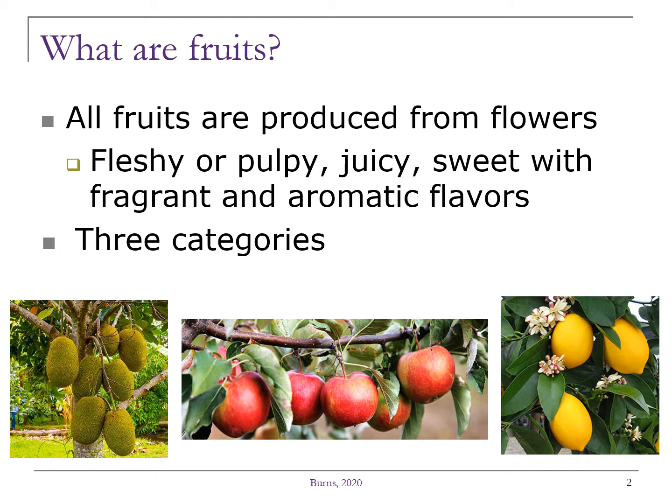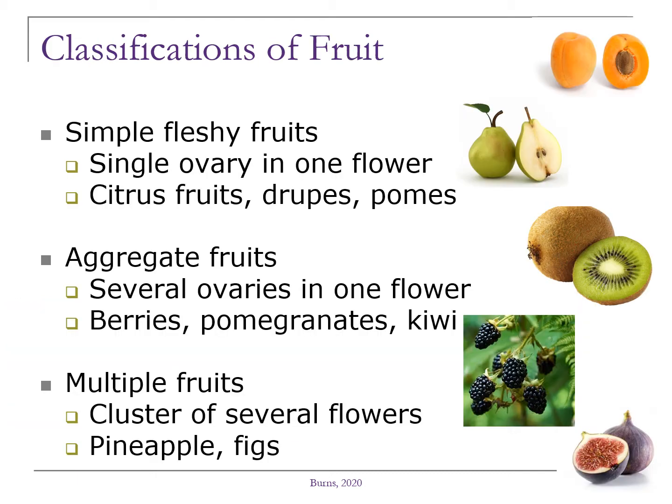Fruits are classified by the number of ovaries and flowers into three different categories. First, the simple fleshy fruits develop from a single ovary in one flower and include citrus fruits, drupes, and pomes. Citrus fruits include oranges, lemons, and limes.